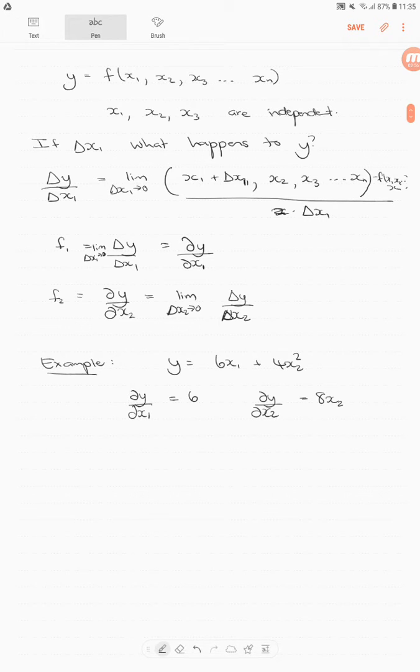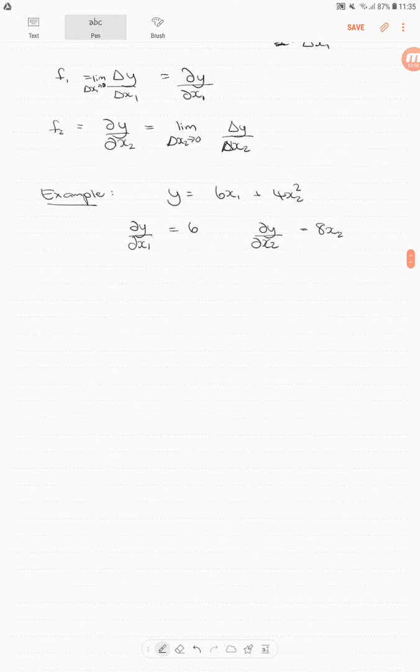What happens if we have interactions between x1? So we have y equal to 6x1 plus 4x2 squared plus 4x1x2. The partial derivative ∂y/∂x1 is equal to 6 plus 4x2.